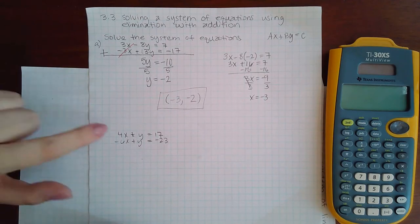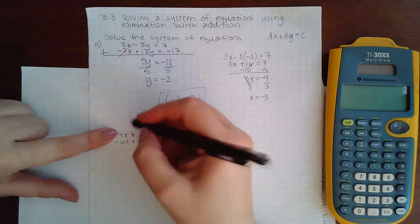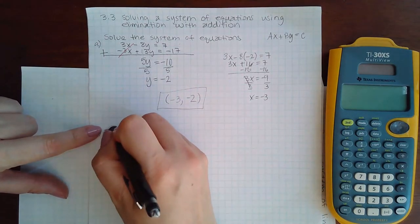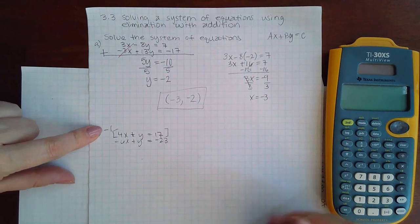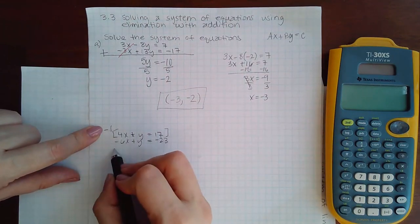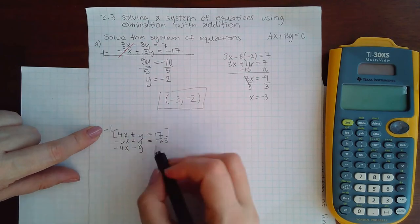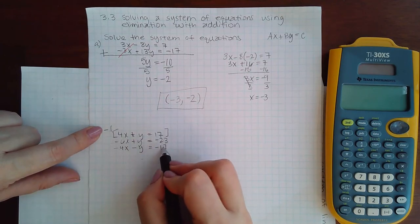I'm going to take the top equation and multiply it by -1. That's going to make this -4x, make this -y, and make this -17.